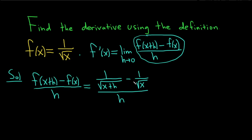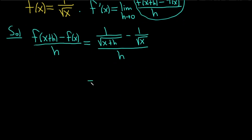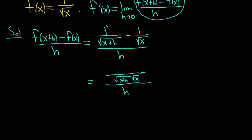Now we perform the subtraction in the numerator. The least common denominator is the product of the two square roots: square root of x plus h times square root of x. Using the shortcut, the numerator becomes 1 times square root of x minus 1 times square root of x plus h, all over this LCD, divided by h.